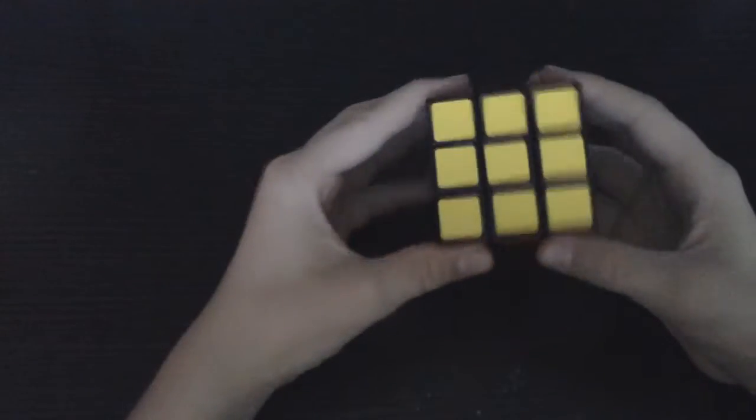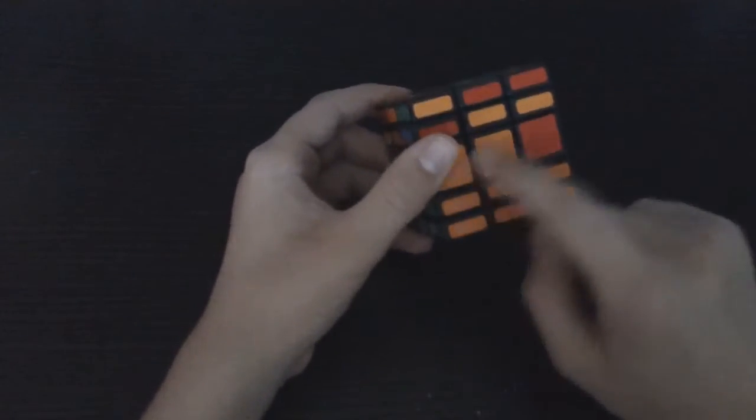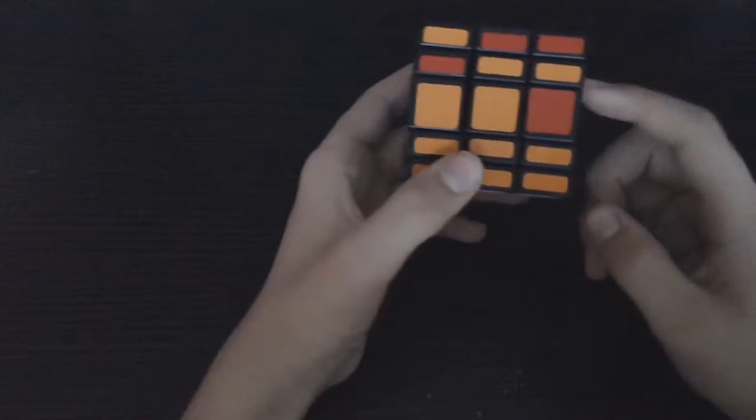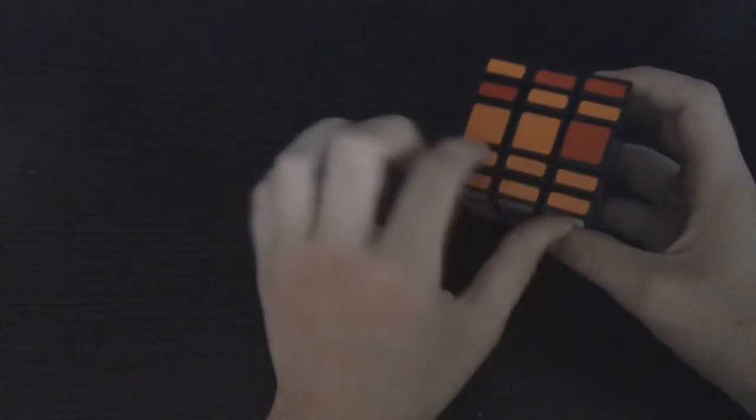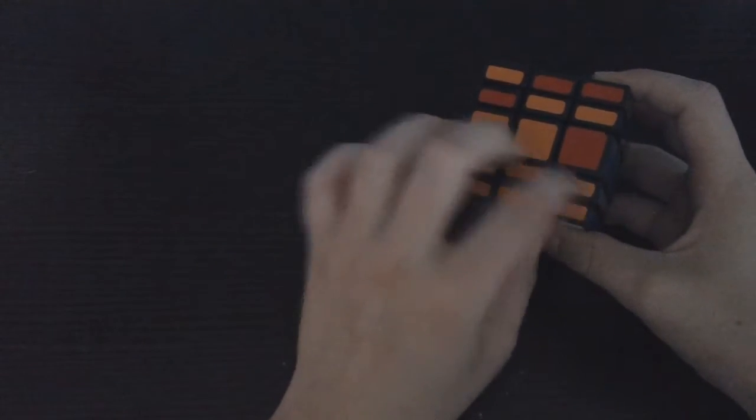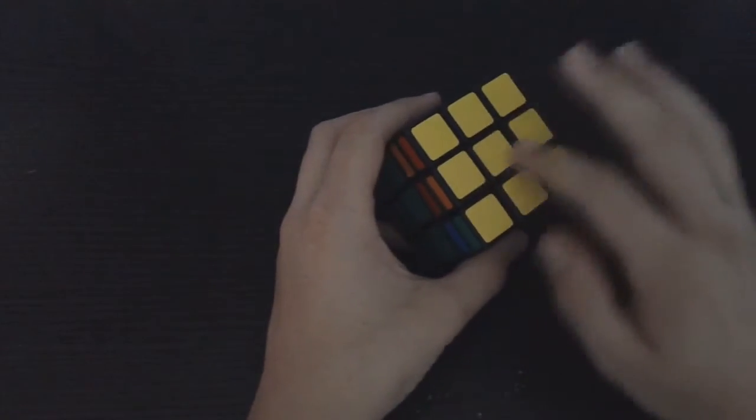In last part 1, we solved all these edges, we solved these corner slots, these corners, and this is just magically solved. Then we solved the first side, the yellow side.